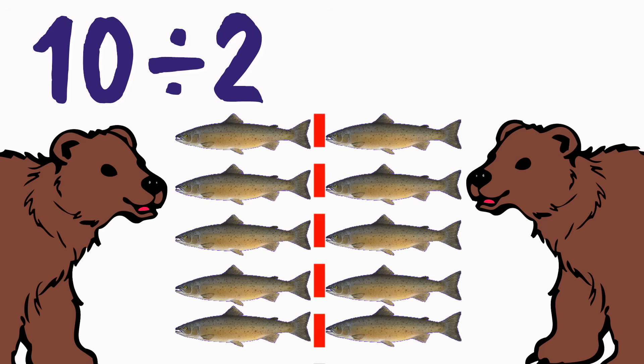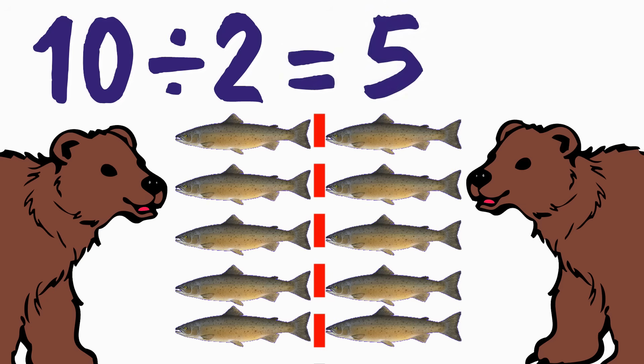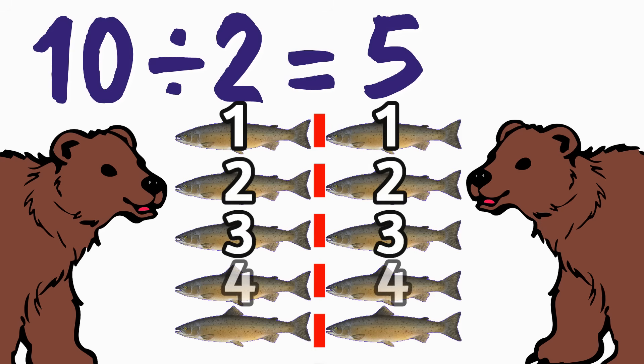The quotient — the answer to the division problem — will tell us how many fish each bear gets. What is ten divided by two? Yeah, five. Great. Ten divided by two equals five. Each bear gets one, two, three, four, five fish. Ten divided by two equals five. Awesome job.